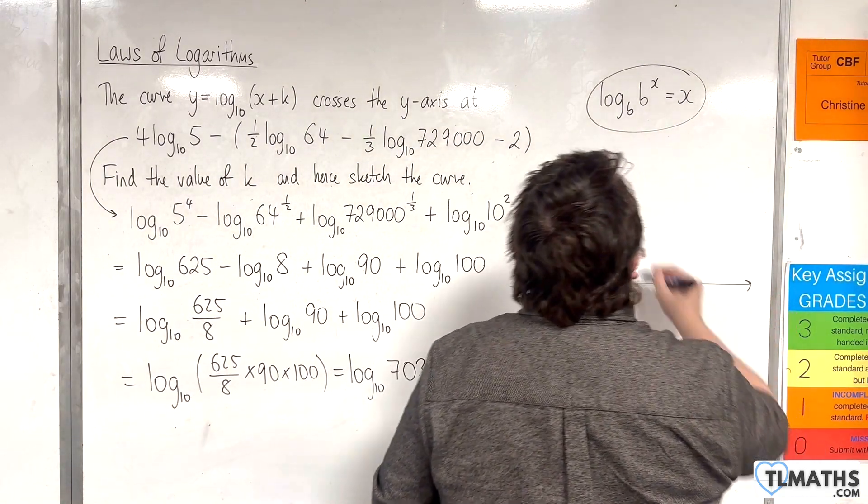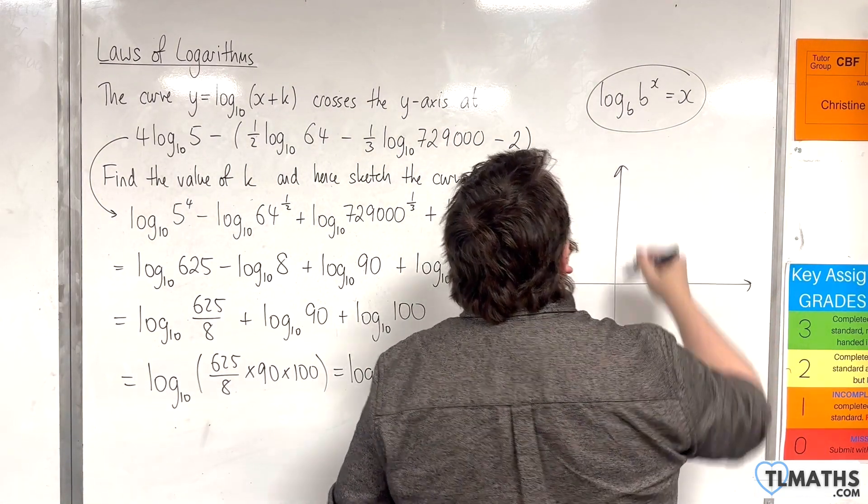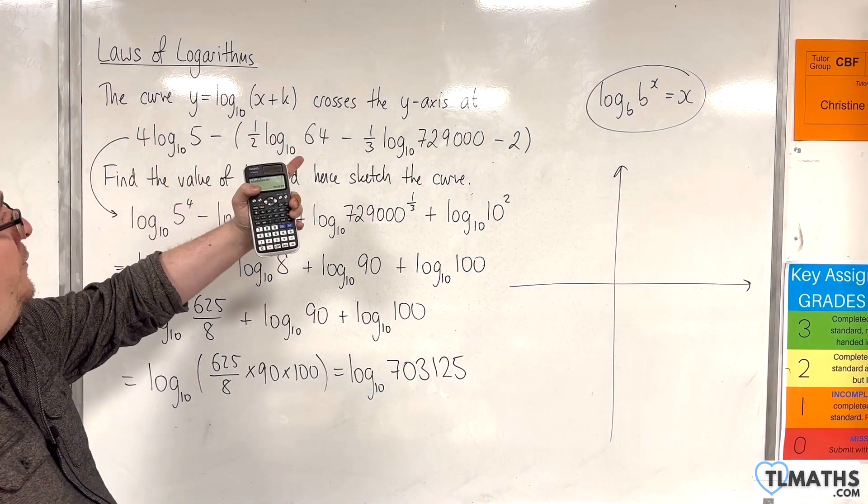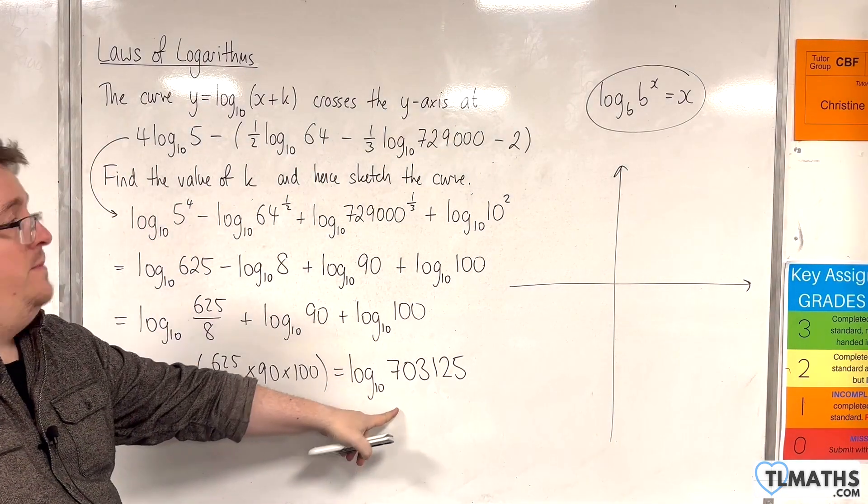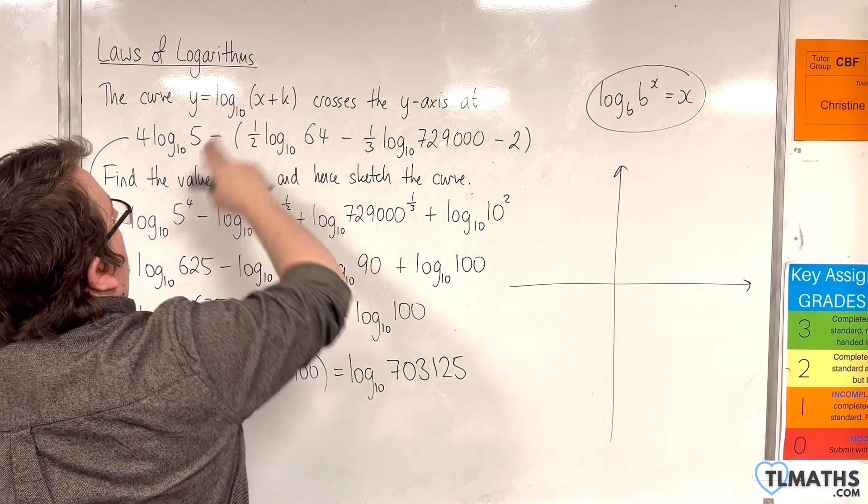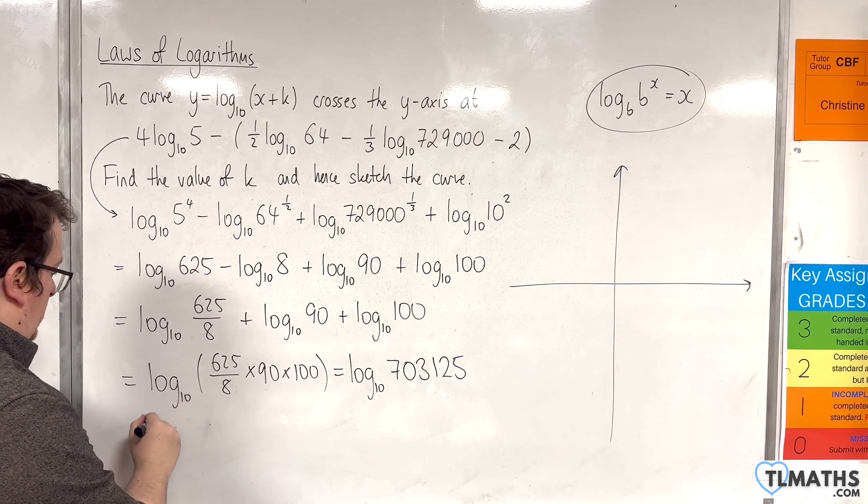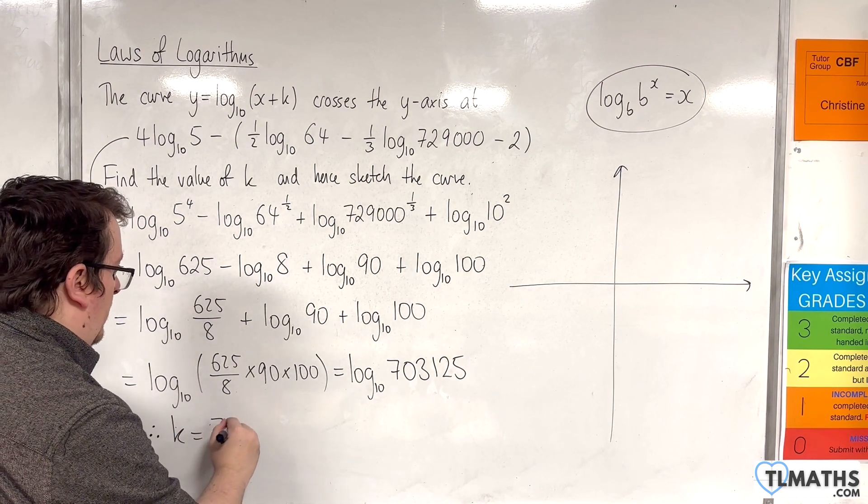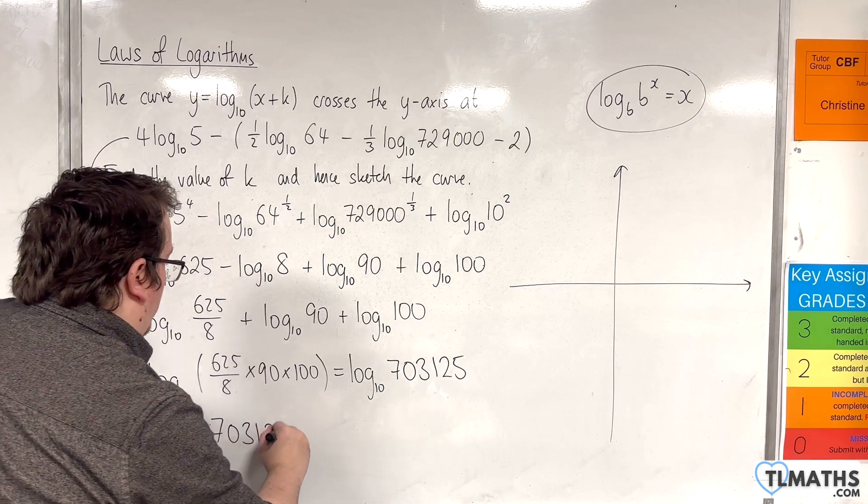Okay. Now, it crosses the y-axis at that point. So that would be when x is 0. So that means that k must be 703,125.